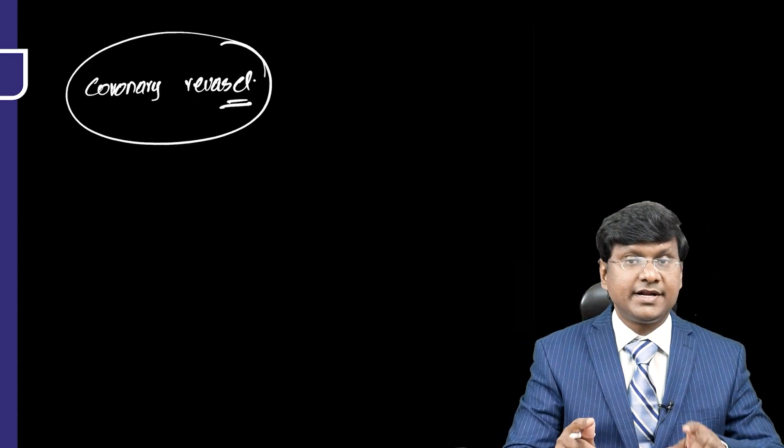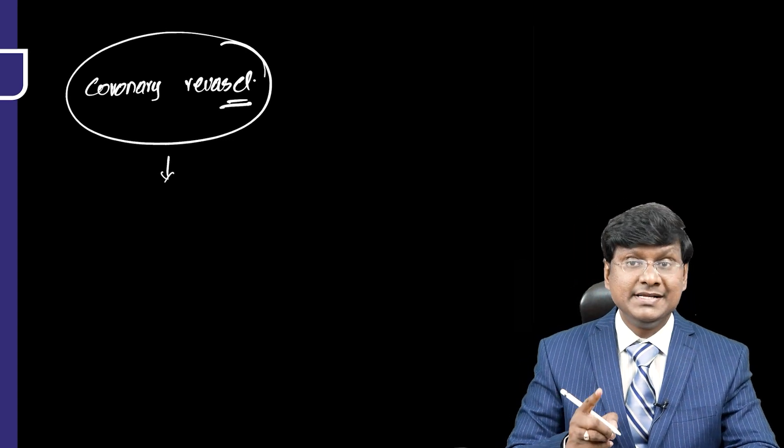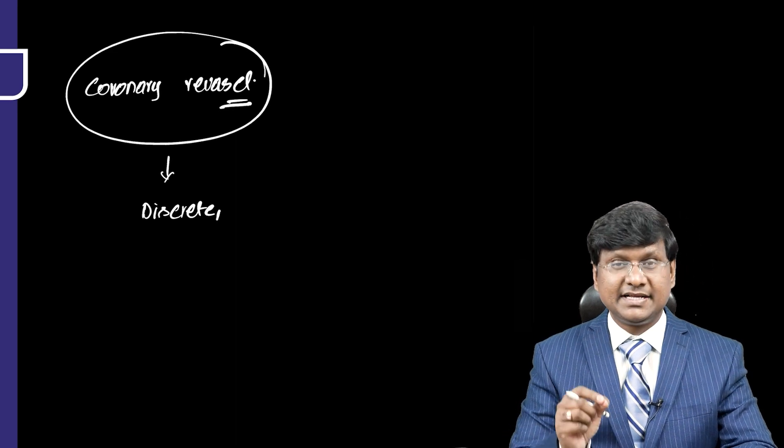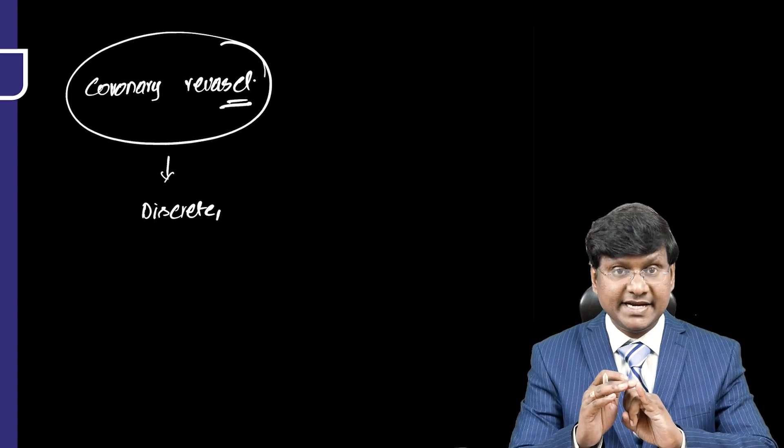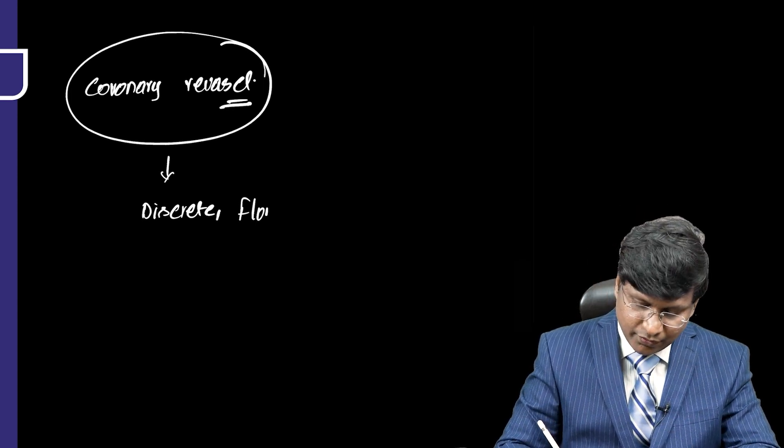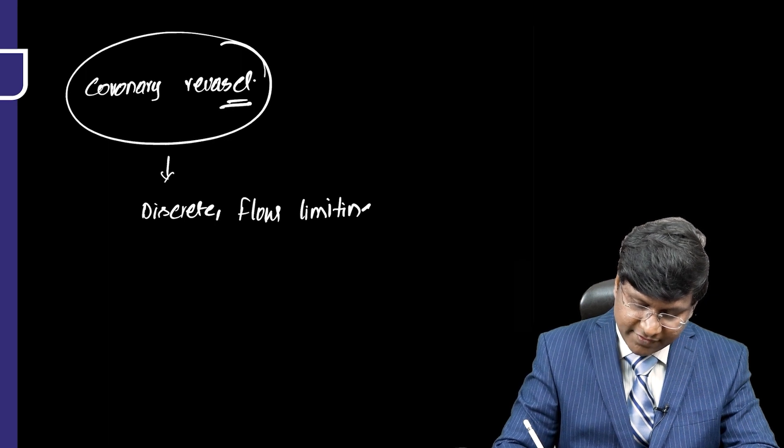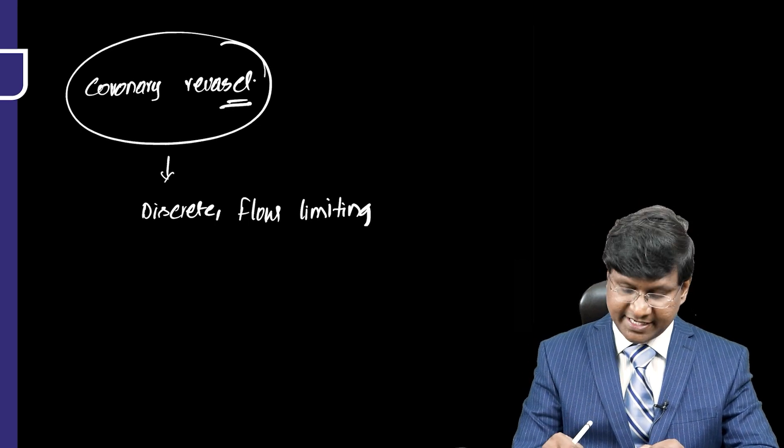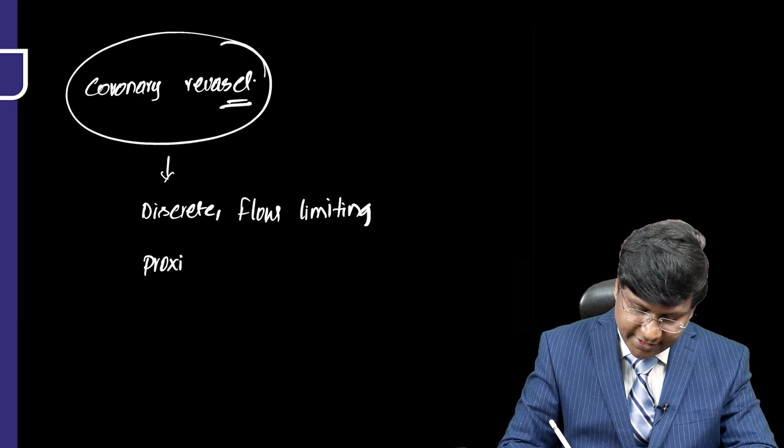This coronary revascularization is helpful in patients who are having discrete, that means only in one area there is spasm. If there is discrete flow limiting, because of this discrete vasospasm, there is limitation of the flow. And this particular discrete vasospasm should be there in the proximal part of the coronary artery.